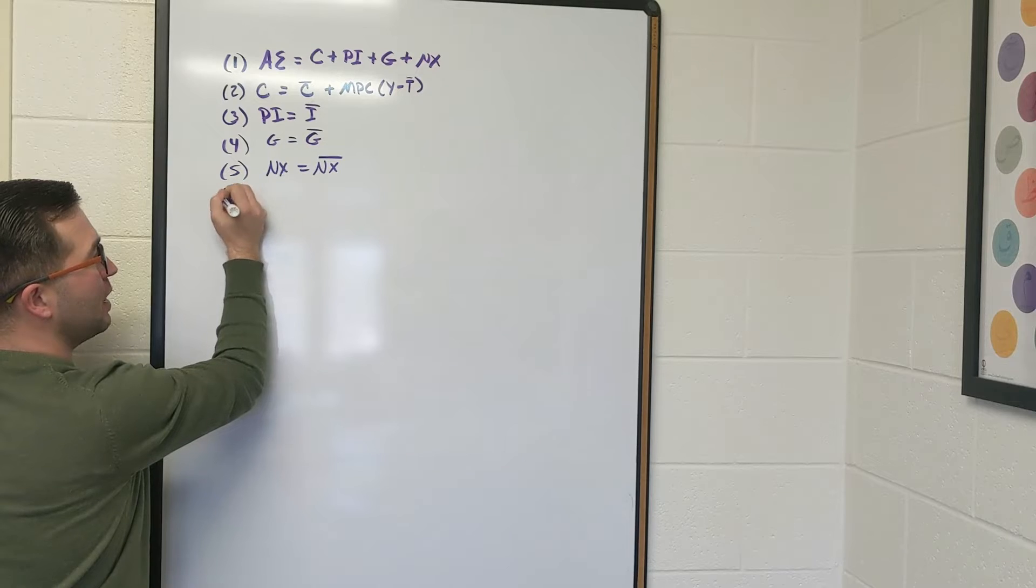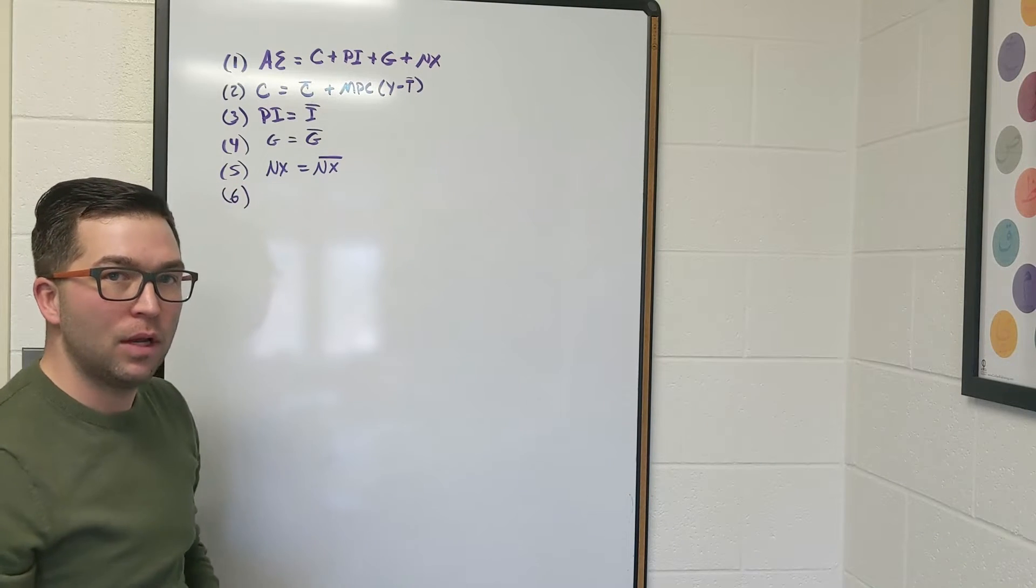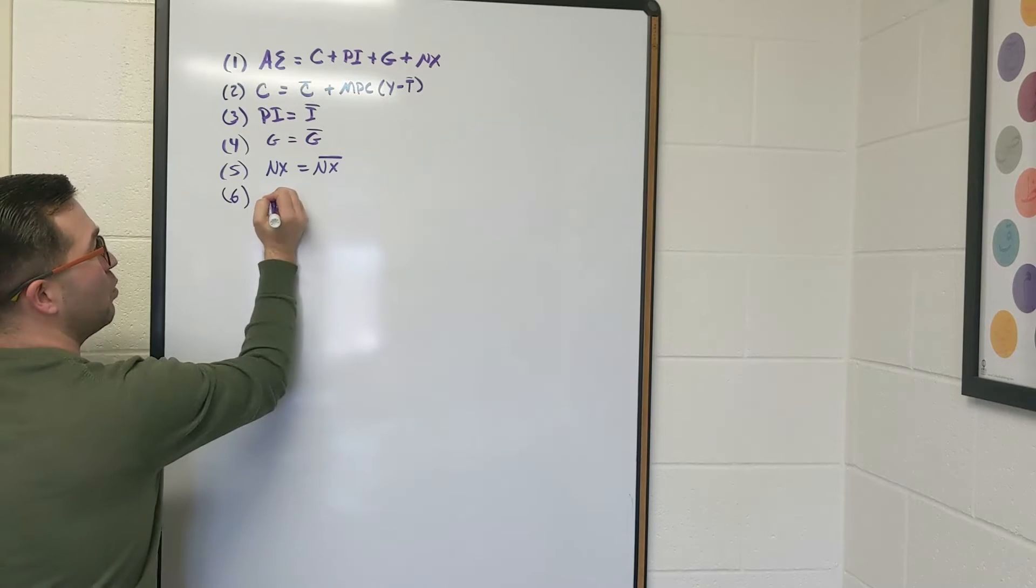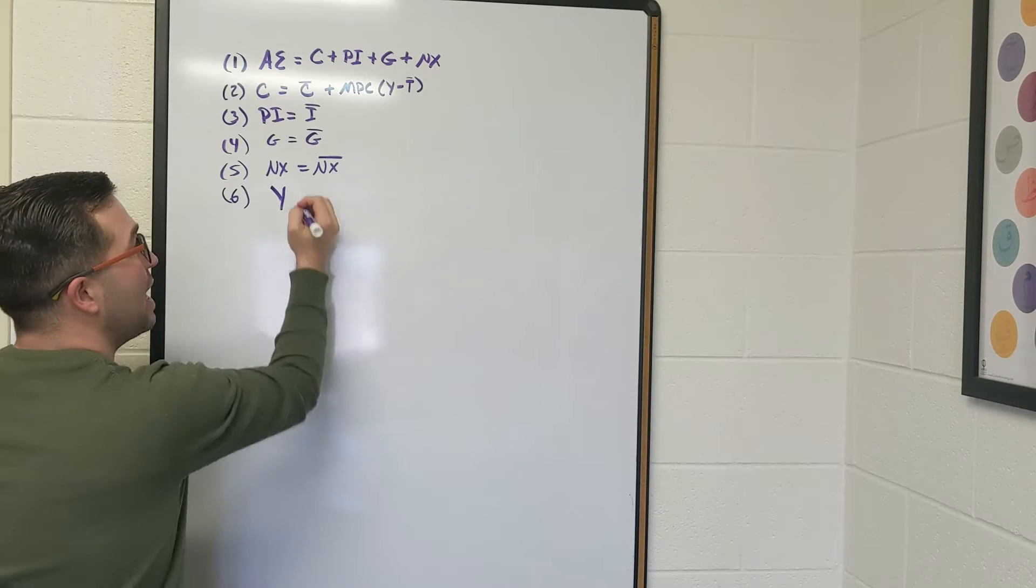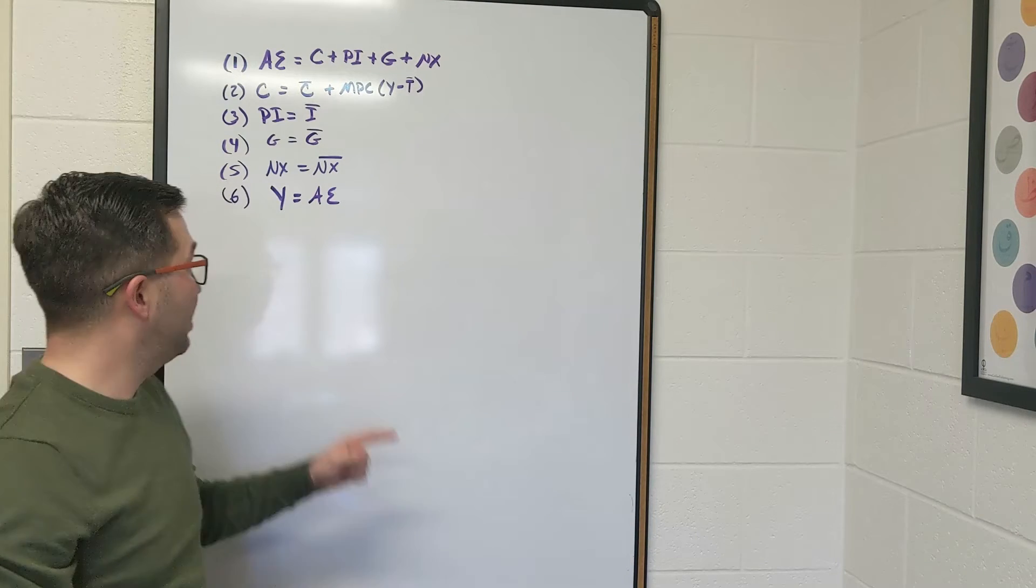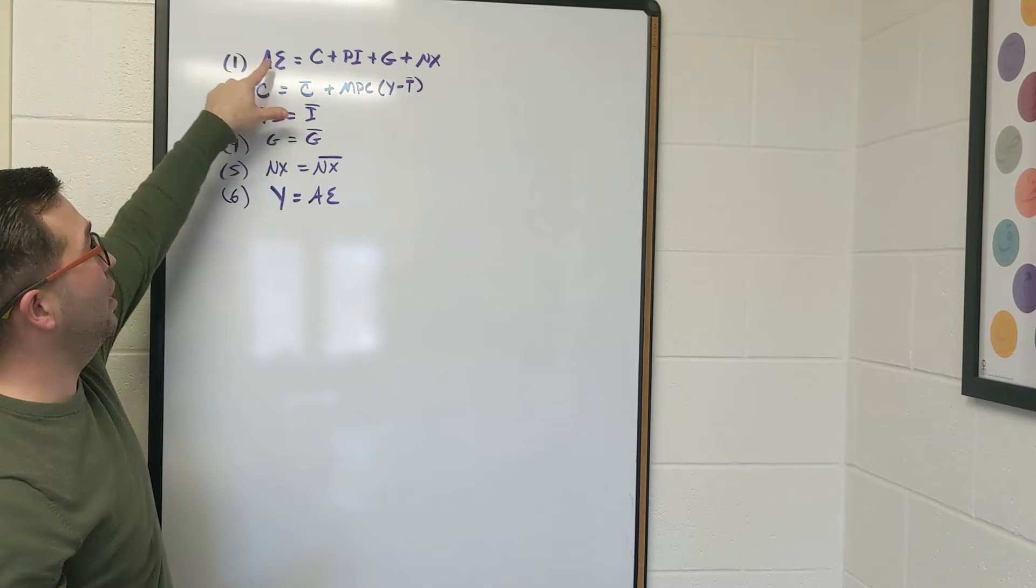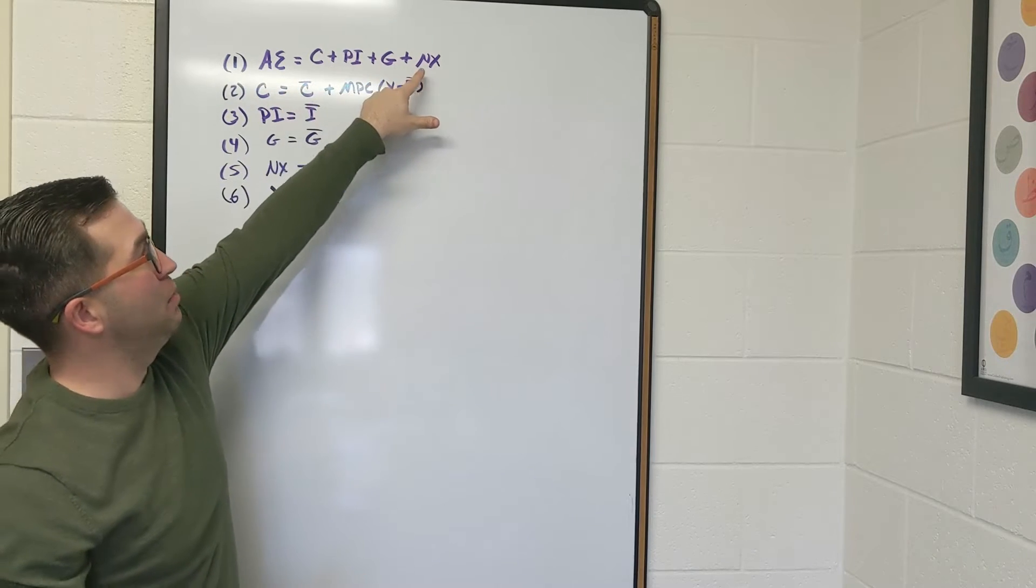There's one more equation, a sixth equation that we need, and that's when we are in macroeconomic equilibrium, which hopefully by now you know is when real GDP, represented by Y, equals aggregate expenditure. So what we're going to do is take this and say, okay, if Y equals aggregate expenditure, and aggregate expenditure is C plus PI plus G plus NX,